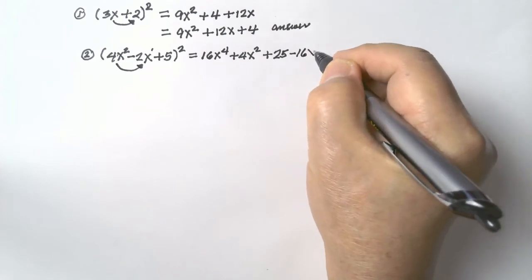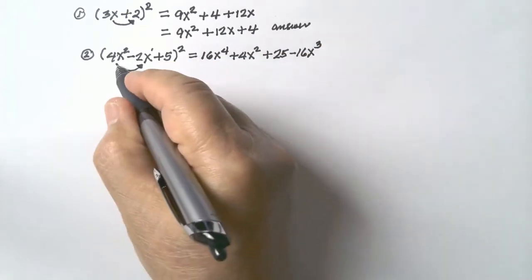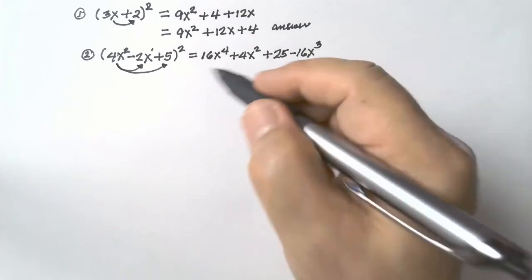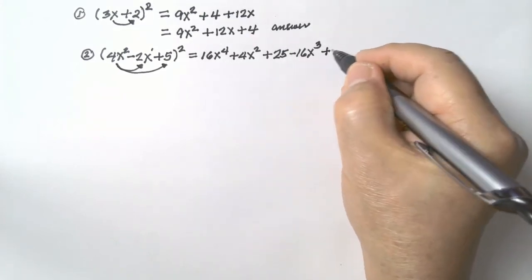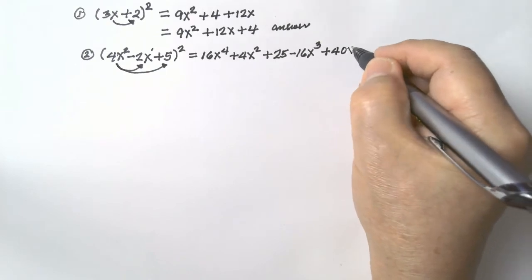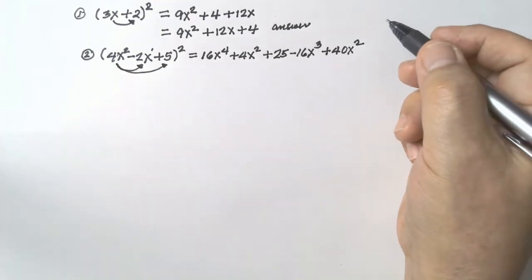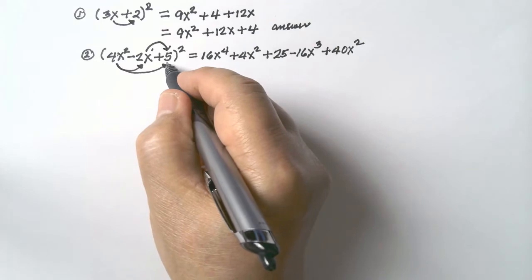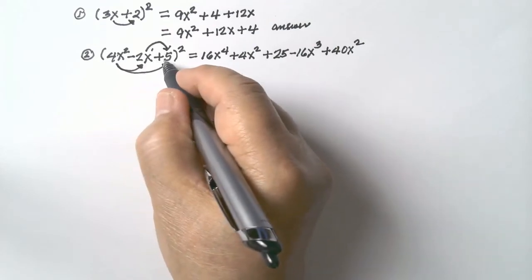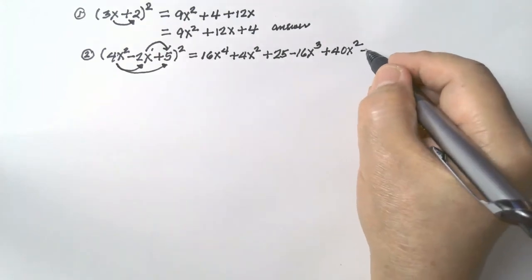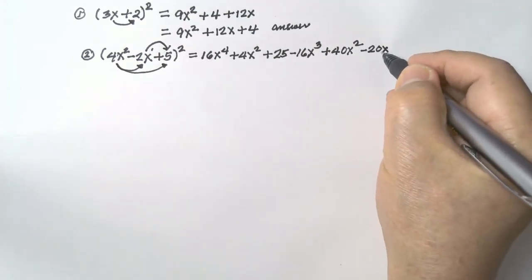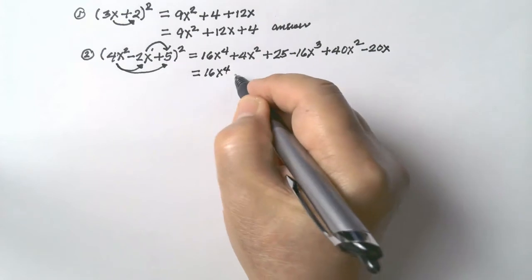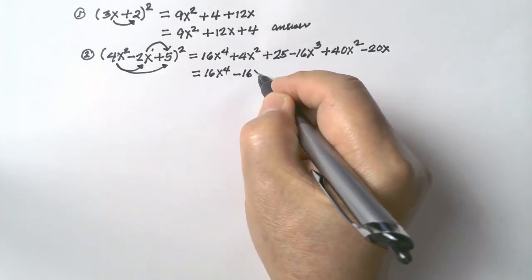So we have negative 16x cubed. Multiply the first term by the third: 4x squared times 5 = 20x squared, then times 2 = plus 40x squared. Multiply the second by the third term: negative 2x times 5 = negative 10x, times 2 = negative 20x. Then arrange the terms: 16x to the 4th minus 16x cubed.